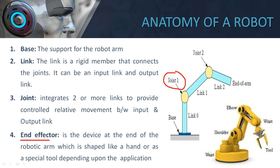The fourth important part is the end effector. The end effector is a device at the end of the robotic arm which is shaped like a hand or as a special tool depending upon the application. Your fingers are your end effector — they can grip objects, hold them, squeeze them, or throw them. Likewise, in a robot, end effectors perform different types of operations. This is about the anatomy of a robot.